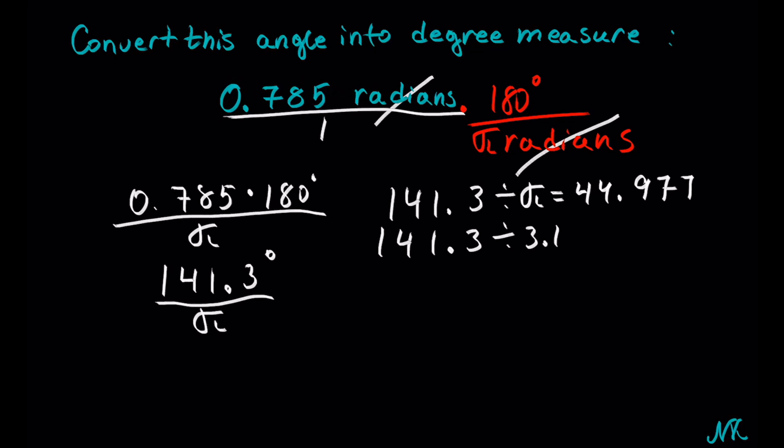Now the reason these two answers are not exactly the same is because pi is a never-ending decimal—3.141592654 and it keeps going forever. The more you round off pi, the more your answer is rounded off.